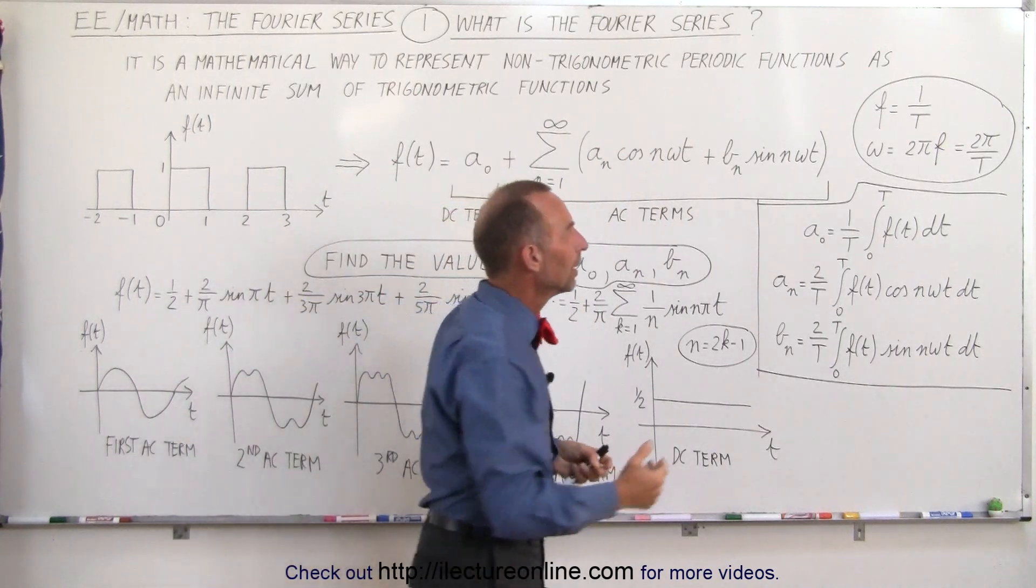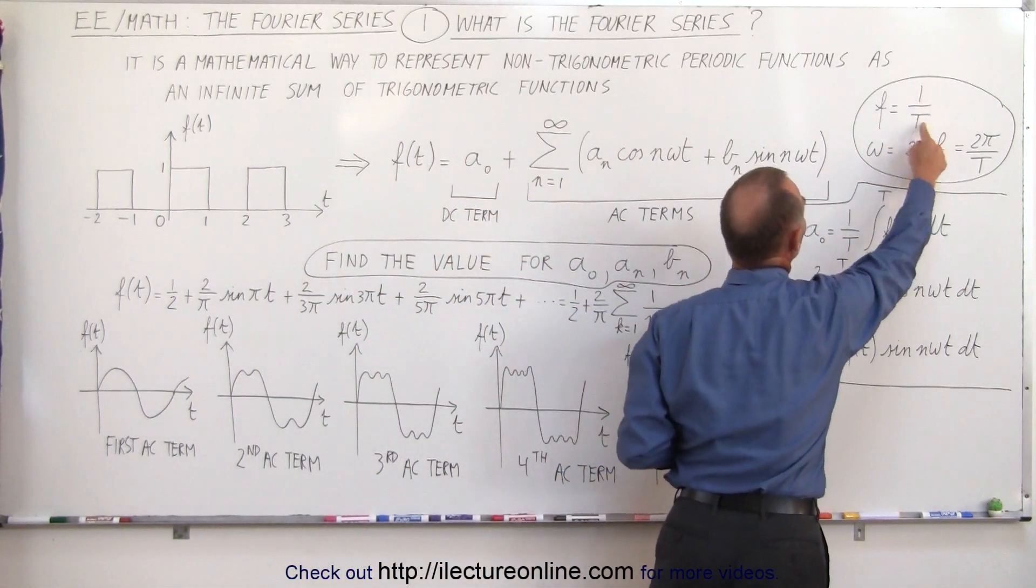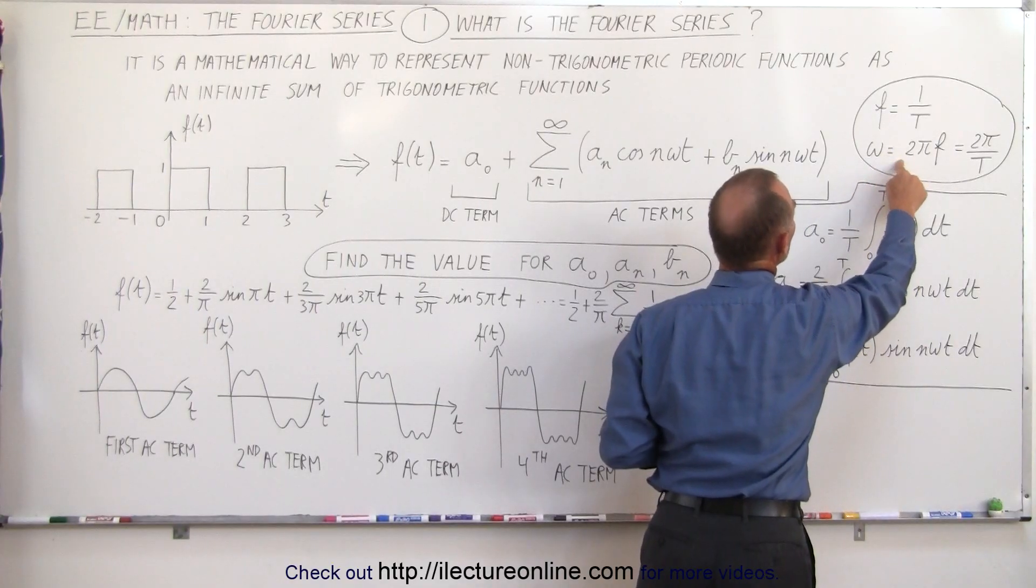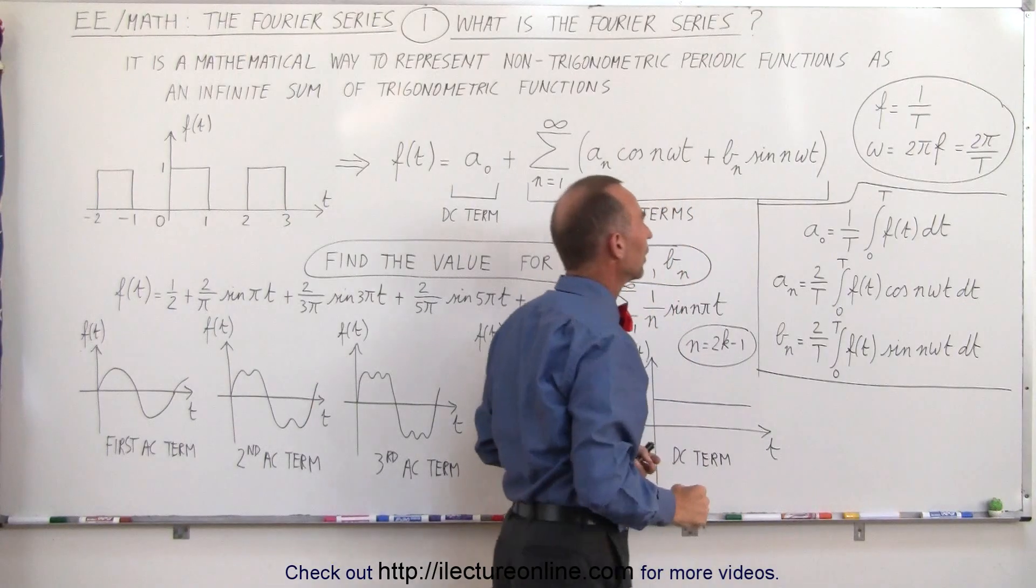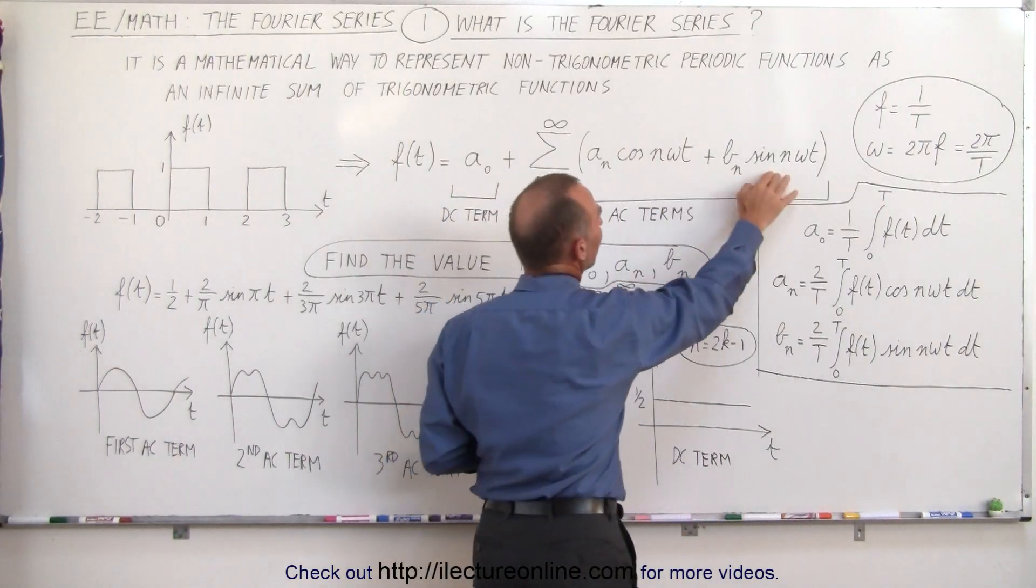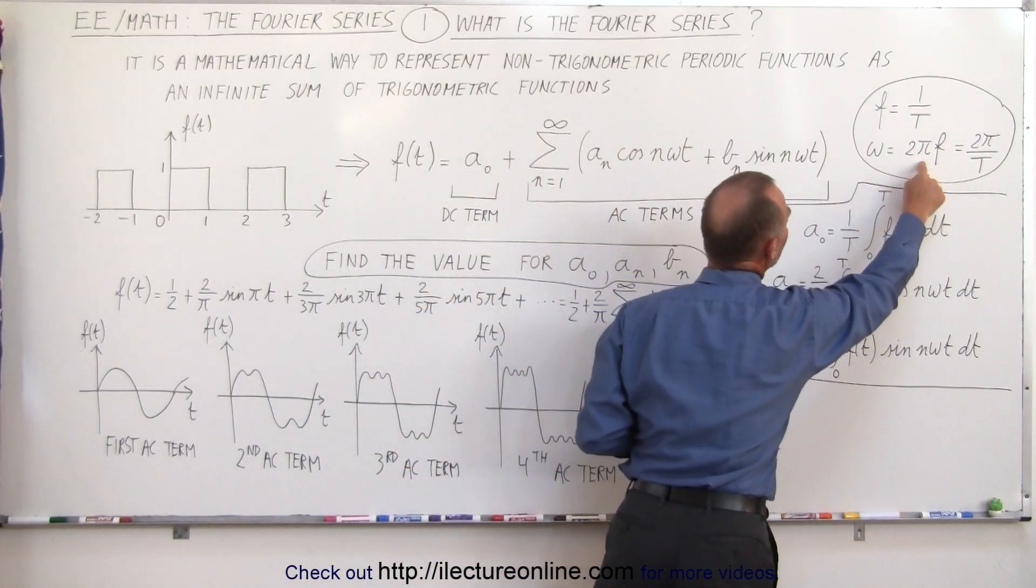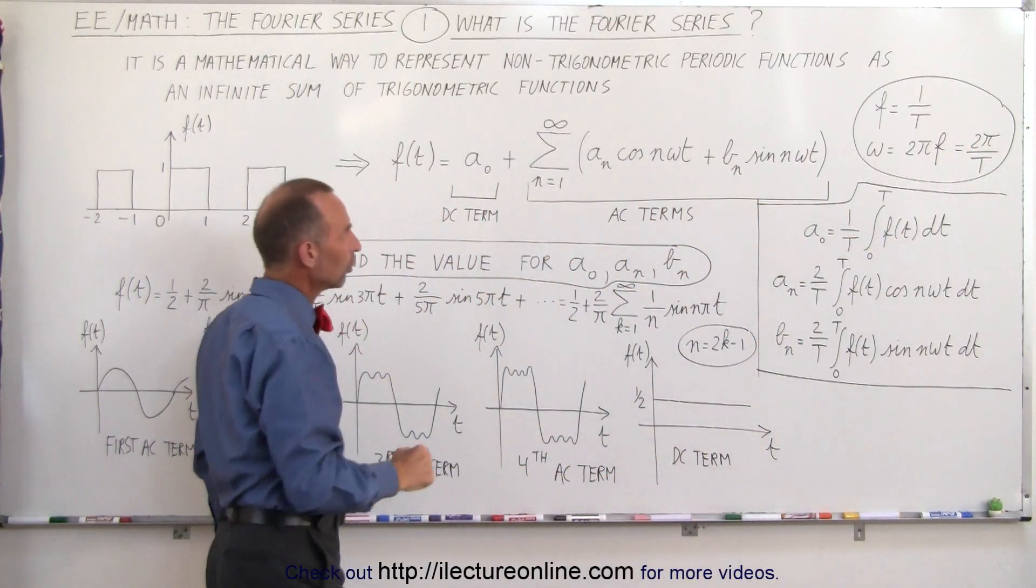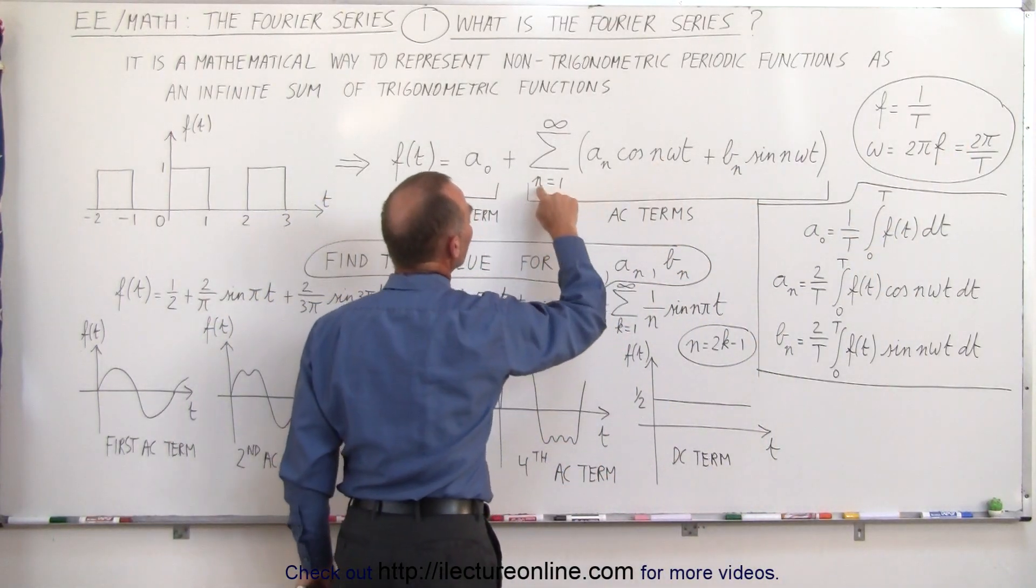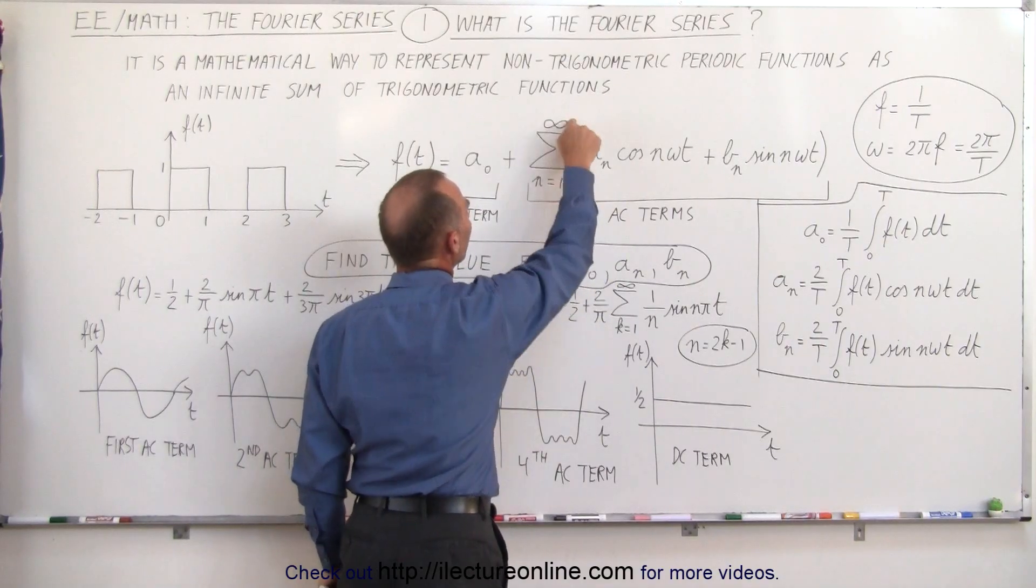Let's remember that the frequency of a function is 1 over the period and the radial frequency is 2 pi times the frequency or 2 pi over the period. So these trigonometric functions are dependent on omega or 2 pi over the period. Notice also that n is simply the number here going from 1 to infinity.